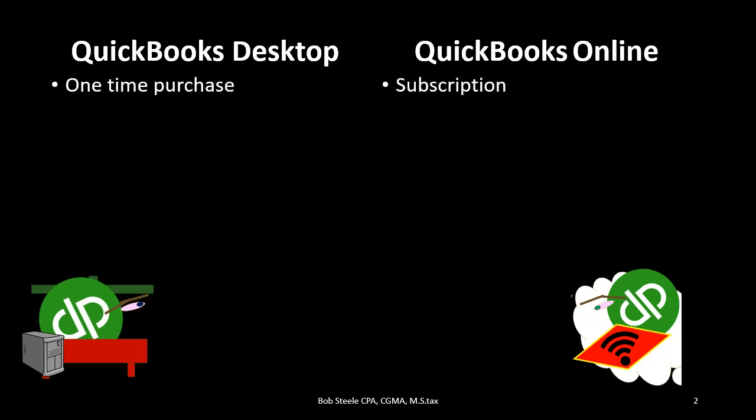The first difference is a purchasing difference. When you purchase the desktop version, you download the software and it will be on your computer, rather than the online version, which is done in the cloud. When you purchase the desktop version, you pay a one-time fee because you own the software. When you purchase the online version, you pay a subscription because you're using it in that online format.